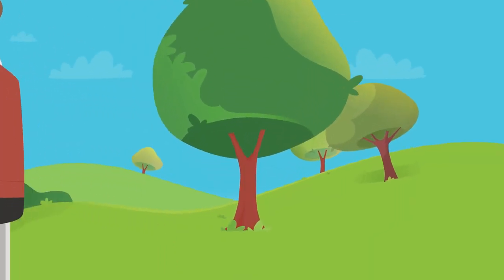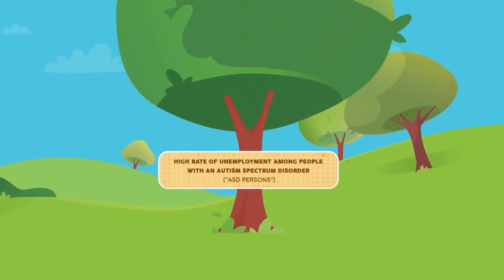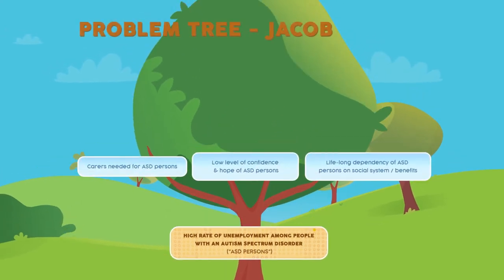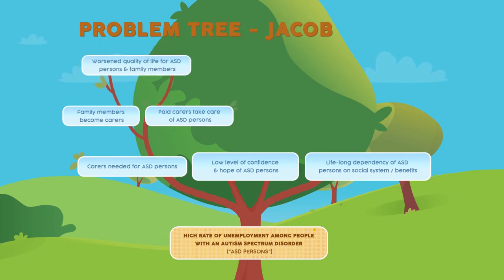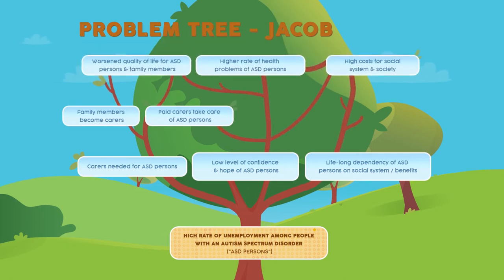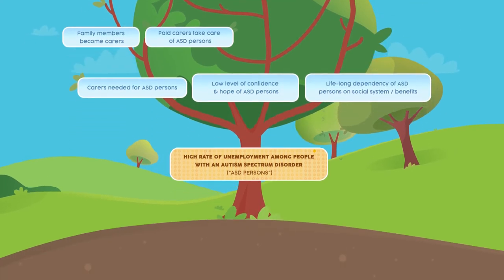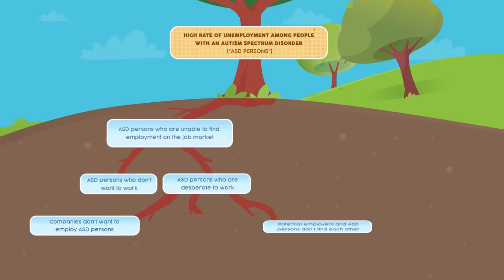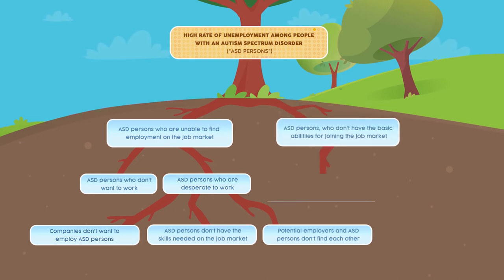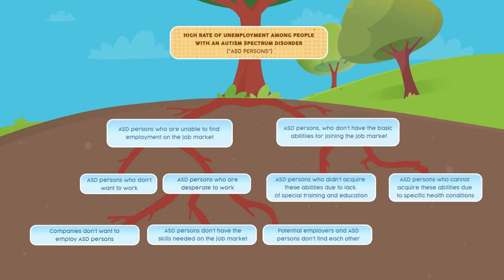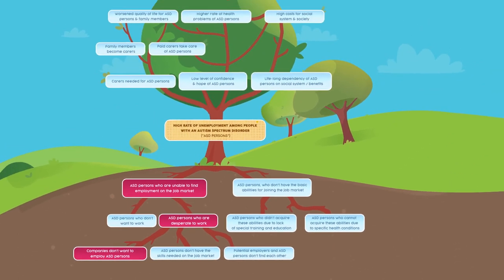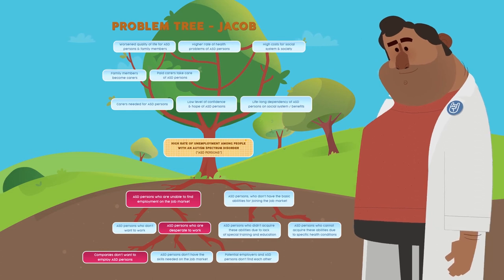Let's look at Jacob's core problem, which is the trunk of the problem tree. We know that ASD persons have difficulties finding jobs. The branches are the effects of the problem — for example, one of the effects is their lifelong dependency on the social system. The roots are the causes of the problem. For example, we can have two causes: ASD persons are unable to find jobs, and they don't have the basic abilities for joining the job market.